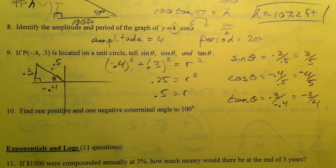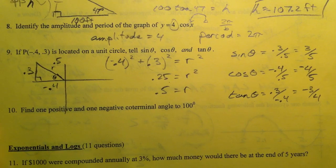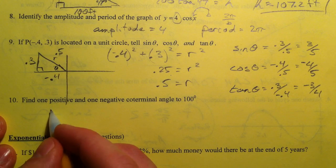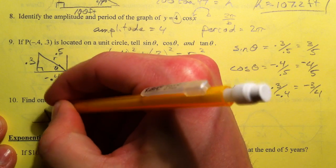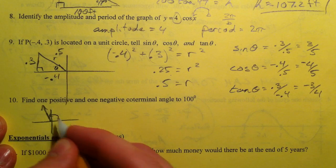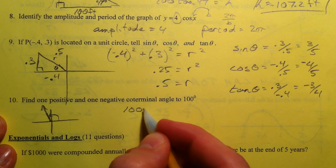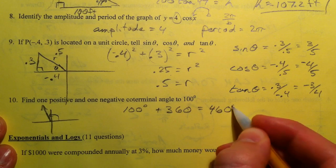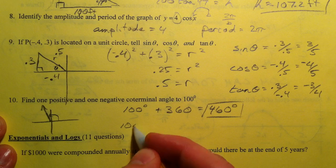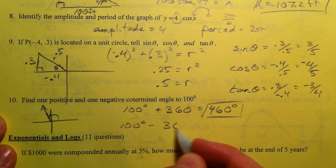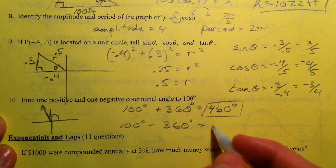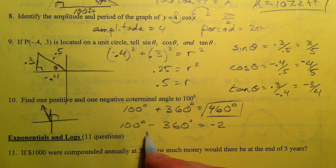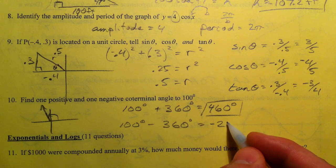Find one positive and one negative coterminal angle to 100 degrees. And so coterminal angles are ones that share an ending point. This is 100 degrees. And so I'm going to do 100 degrees and I'm going to add one revolution to it, so I'll get 460 degrees. And I could do 100 degrees and I could subtract 360 from it, and I would get negative 230, sorry scratch that 240 degrees.